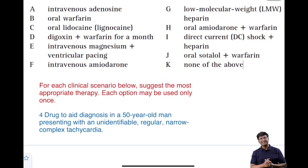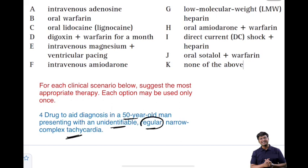The fourth important clinical scenario: a drug to aid diagnosis in a 50-year-old man presenting with an unidentifiable regular narrow complex tachycardia. Narrow complex tachycardias include SVT, atrial fibrillation, atrial flutter, and sinus tachycardia. Since the rhythm is described as regular, and atrial fibrillation is irregularly irregular, this patient is most likely having SVT.